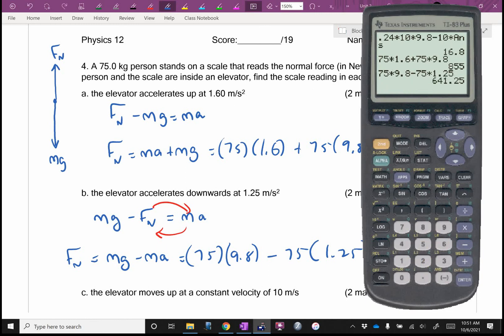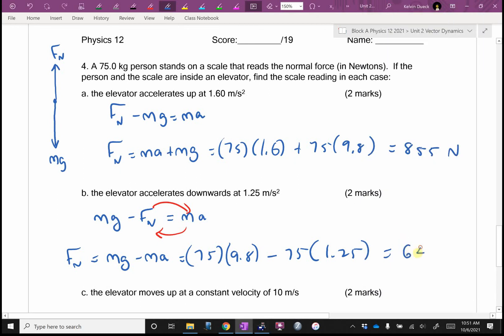And I get 641.25, 641. Is that right? People nodding. By the way, for both of these, if you've got the right answer, two out of two. Otherwise, it would be half mark for that, half mark for getting the normal force by itself, half mark for the numbers, half mark for the answer. Again, half mark for that, half mark for getting the normal force by itself, half mark for the numbers, half mark for the answer.